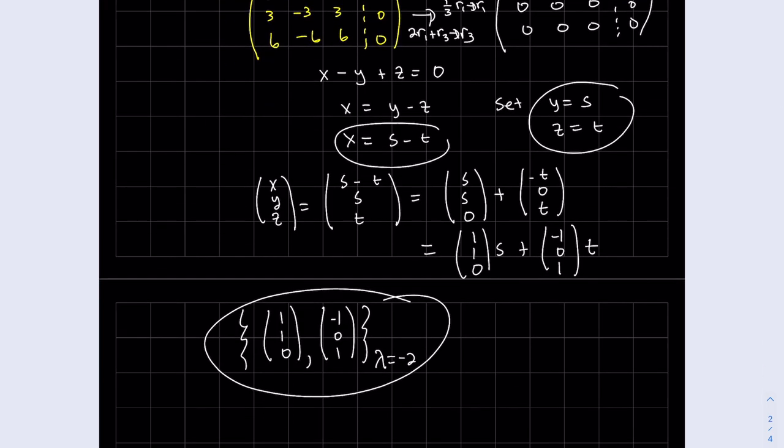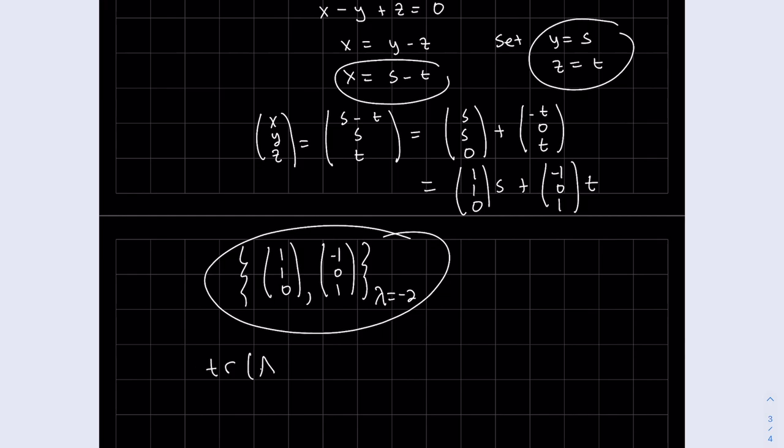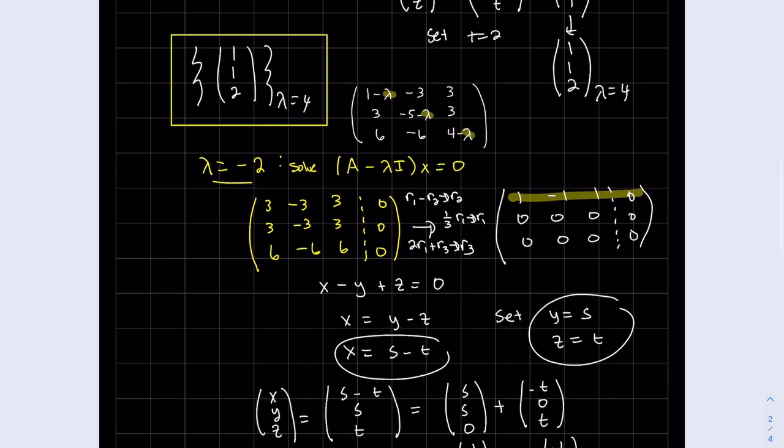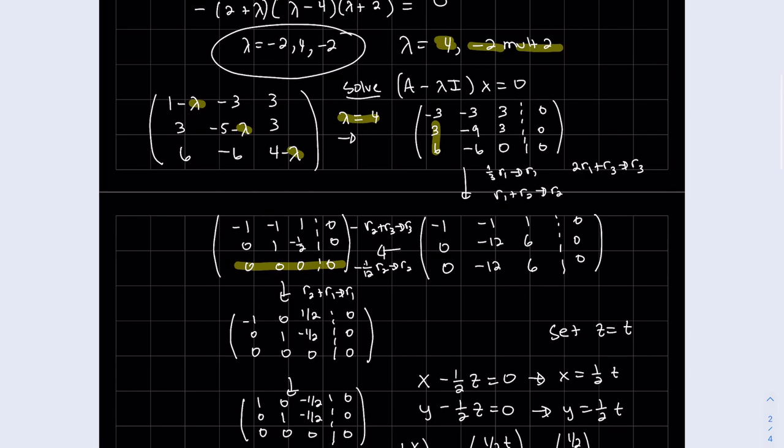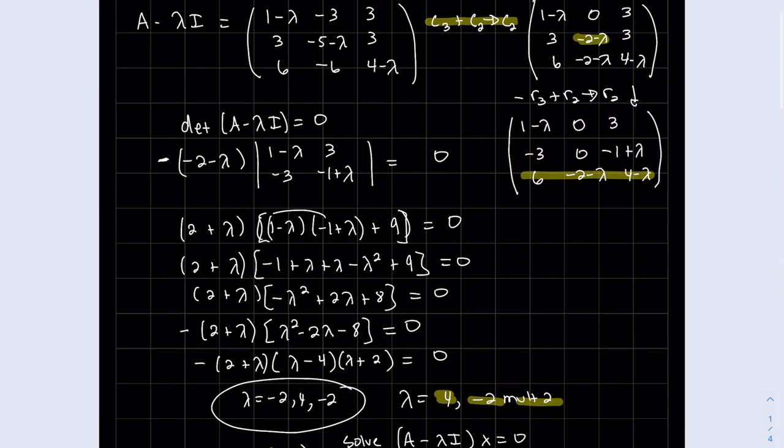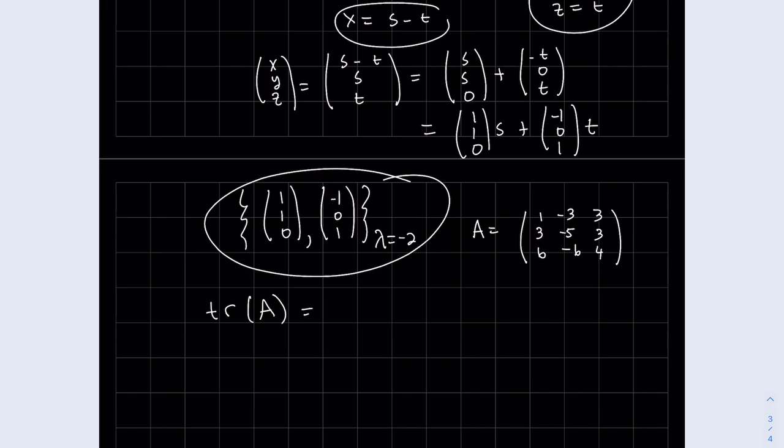If you want to check the trace, we should have probably checked the trace of A before we found the eigenvectors. It looks like it worked out. The sum of the diagonals. Looks like we get zero. We had three eigenvalues, minus two, four, minus two. So the sum is the same as the trace. It worked out.